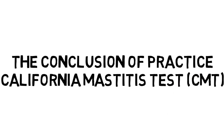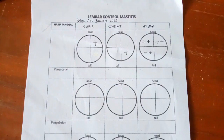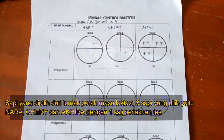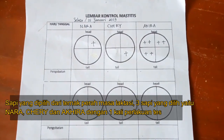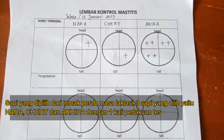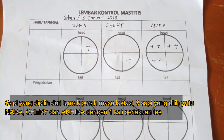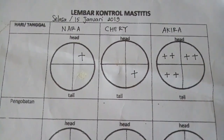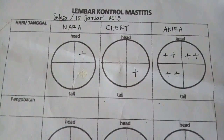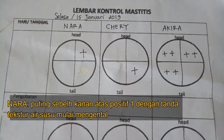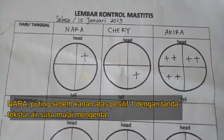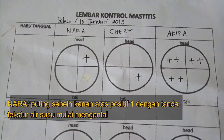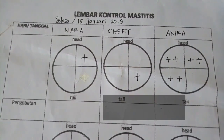Selected cows are cows during lactation. Three chosen cows are named Nara, Cherry, and Akira. Testing of the California Mastitis Test (CMT) was done once for each cow. The results: number 1, Nara — on the upper right nipple, 1 positive, with the sign of milk texture starting to thicken.